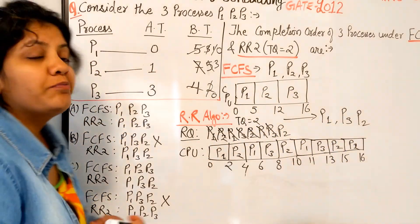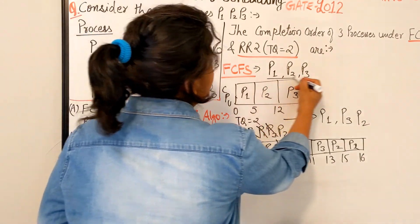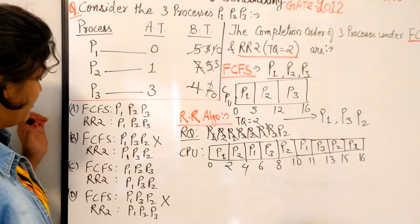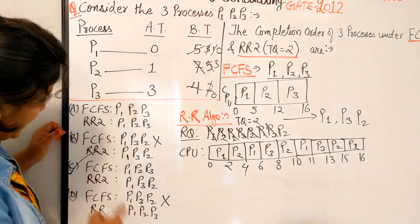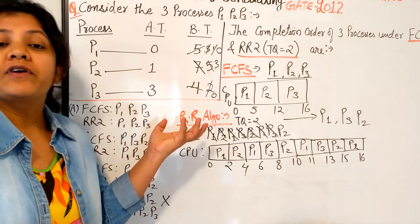So what is the completion order? P1, P3, P2 for Round-Robin, and the completion order for FCFS is P1, P2, P3, which matches with option C. As simple as that. This question has come for two marks, so why lose that?